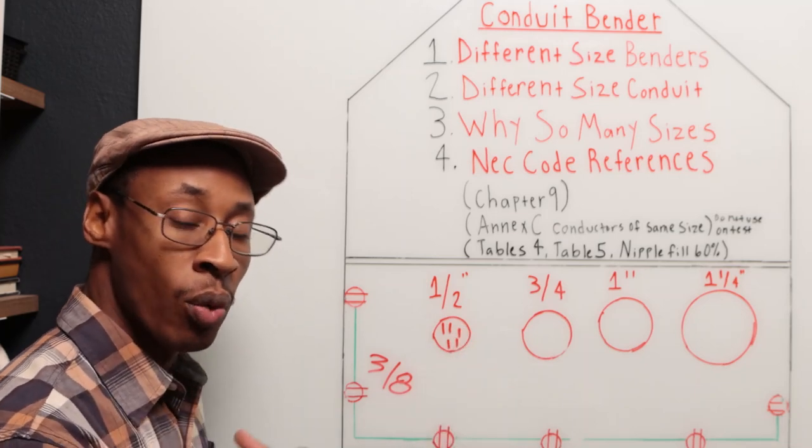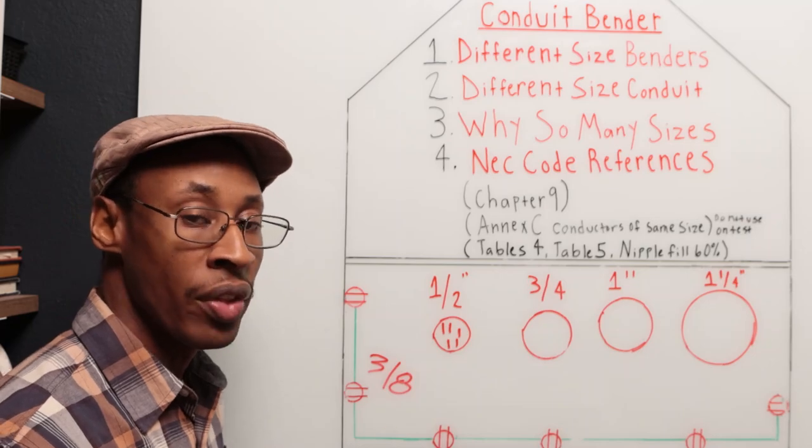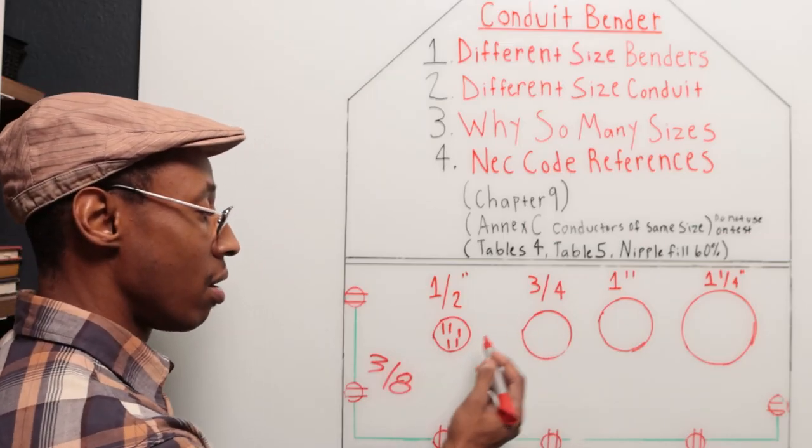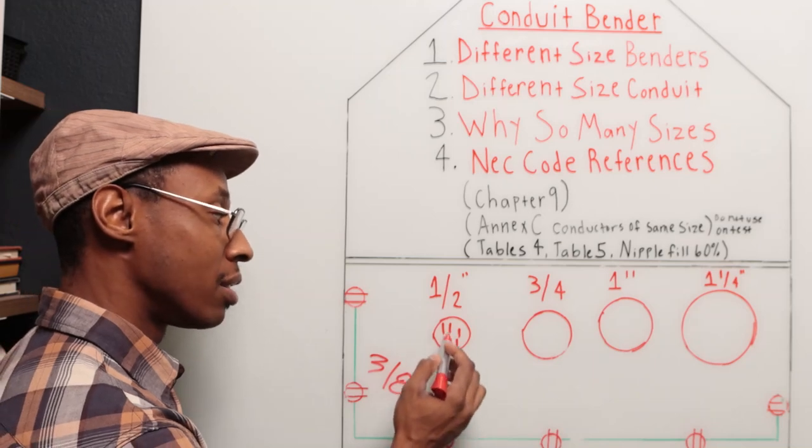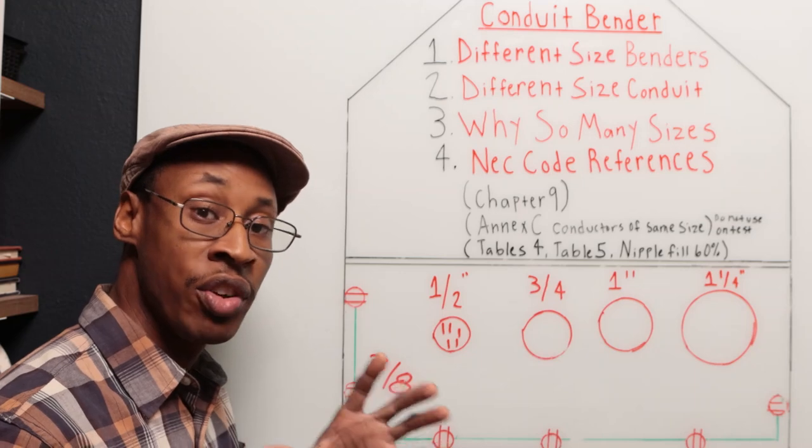And also too, there was a rule in the code that you can't fill that conduit all the way up. So now you only can get four wires in this conduit. That's just hypothetically speaking. That's not what the code says. I'm just giving you an example.